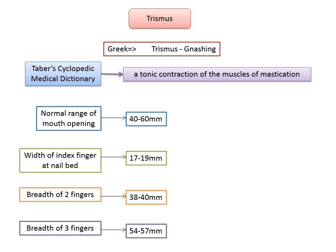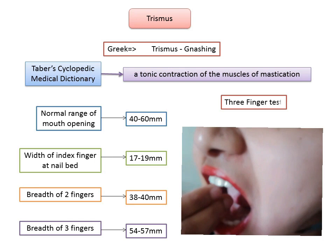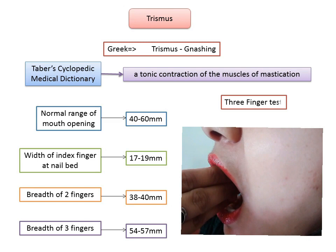There is also gender variation seen, with men exhibiting a greater mouth opening. One simple test to determine trismus is the three-finger test. Ask the patient to insert three fingers into the mouth. If all three fingers fit between the central incisors, mouth opening is considered functional. If less than three fingers can be inserted, restriction is likely.